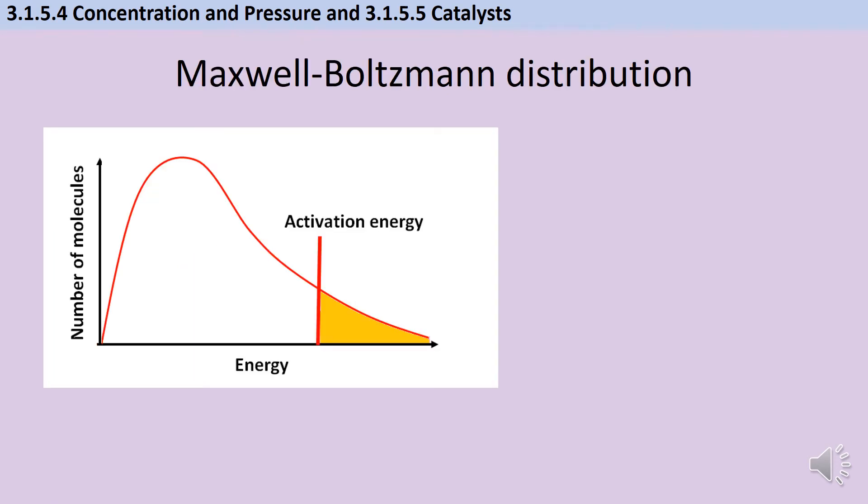On a Maxwell-Boltzmann distribution, the activation energy is shown by a vertical line which touches the x-axis. Anything to the right of that line is a particle that does have sufficient energy. It does have the activation energy, and if it participates in a collision, that collision will be successful, and it will react. Anything to the left of the line has insufficient energy, and even if it collides, no reaction will happen.